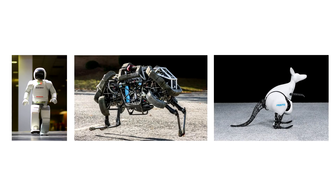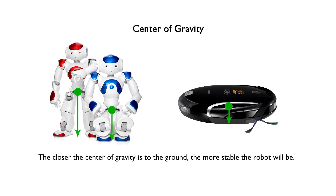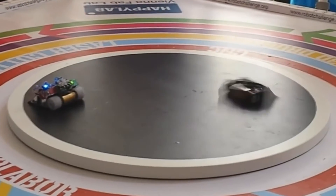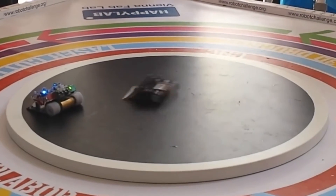Thus when you are not moving, you need to rest one foot on the ground to stabilize. A robot's stability is greatly related to the position of its center of gravity. The center of gravity is the point where all mass is equally distributed around an object — it is the point where all the weight of the robot is focused. The closer the center of gravity is to the ground, the more stable the robot will be. Thus a tall humanoid robot is less stable and topples easily. This explains why sumo and combat robots tend to have a low-profile design, to achieve a lower center of gravity and hence higher stability.